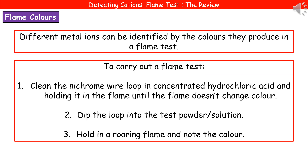The important thing here is the actual colour that the flame burns with, because the colour we get is used to identify what metal ion we have present. This is how different colours represent different metal ions — through the process called a flame test.